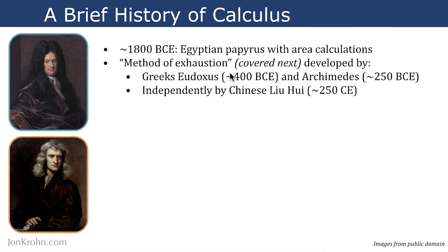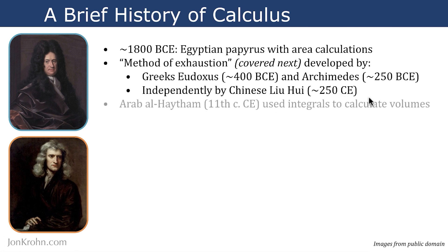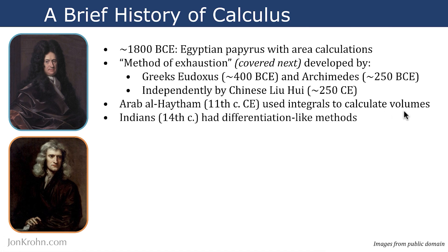The method of exhaustion was independently developed in other cultures, such as by the Chinese about 500 years after Archimedes. A few centuries later, Arabs such as Al-Haytham used integrals to calculate volumes. The Indians, in the 14th century, had differentiation-like methods — which is the first record we have of differential calculus, as the earlier examples were all related to calculating area and integrals.